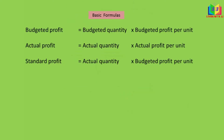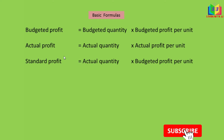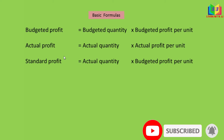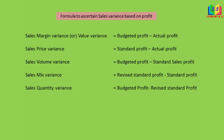These are the basic formulas we need before working out the problem. The first one is budgeted profit, which is budgeted quantity into budgeted profit per unit. Next is actual profit: actual quantity into actual profit per unit. Standard profit is actual quantity into budgeted profit per unit. We have to find these three values first, and then it will be easy to work out any sales margin variance problem.